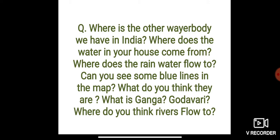Rivers are important water bodies as they provide water for drinking and other purposes. We use water for different purposes. A river originates from the mountains, flows toward the plains, and finally mixes into an ocean or sea.